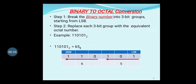If we want to convert a binary number to an octal number, there are certain steps. Step 1 is: break the binary number into 3-bit groups starting from the LSB. If a binary number is given, we are talking about the integer part only for now. The first thing you are supposed to mark is the LSB bit, and from that LSB bit, form groups of 3 bits.